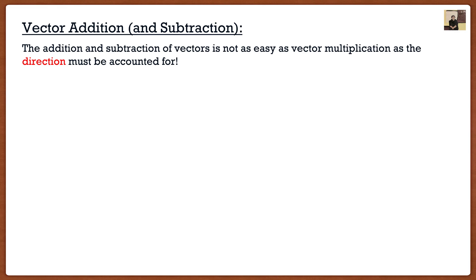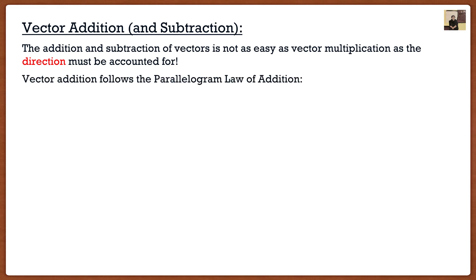As we mentioned, vectors are a little bit different and they follow specific mathematical principles for multiplication, addition, subtraction, etc. In the last video we covered multiplication by scalar, which is pretty simple — we just scale the vector accordingly and maybe flip the direction if the scalar is negative. When it comes to addition and subtraction it's actually a little bit harder, because vectors have direction and this direction must be accounted for. Vector addition is going to follow the parallelogram law of addition.